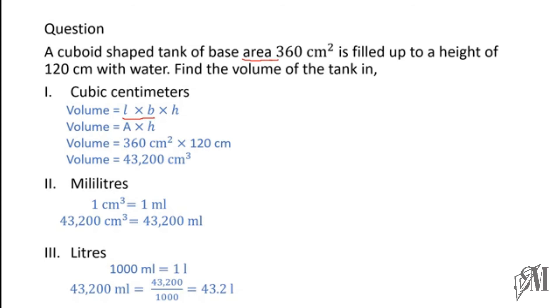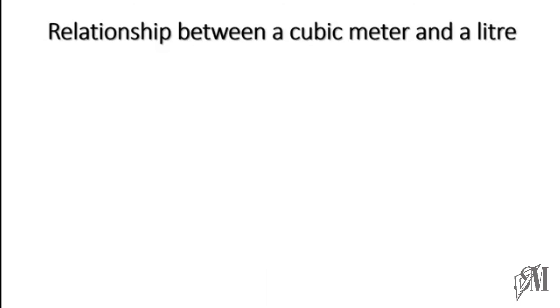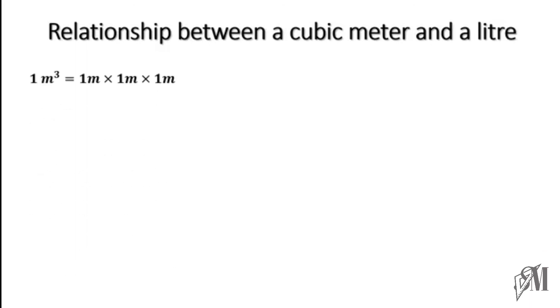Now let's look at another relationship — between cubic meter and liter. One cubic meter is 1 meter × 1 meter × 1 meter. Since 1 meter equals 100 centimeters, we can convert each meter to centimeters.